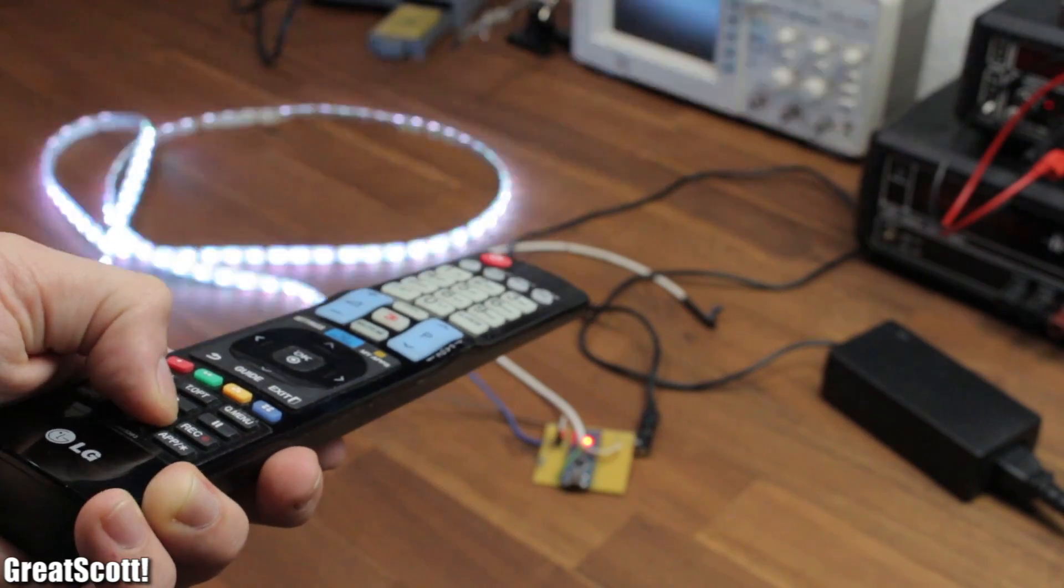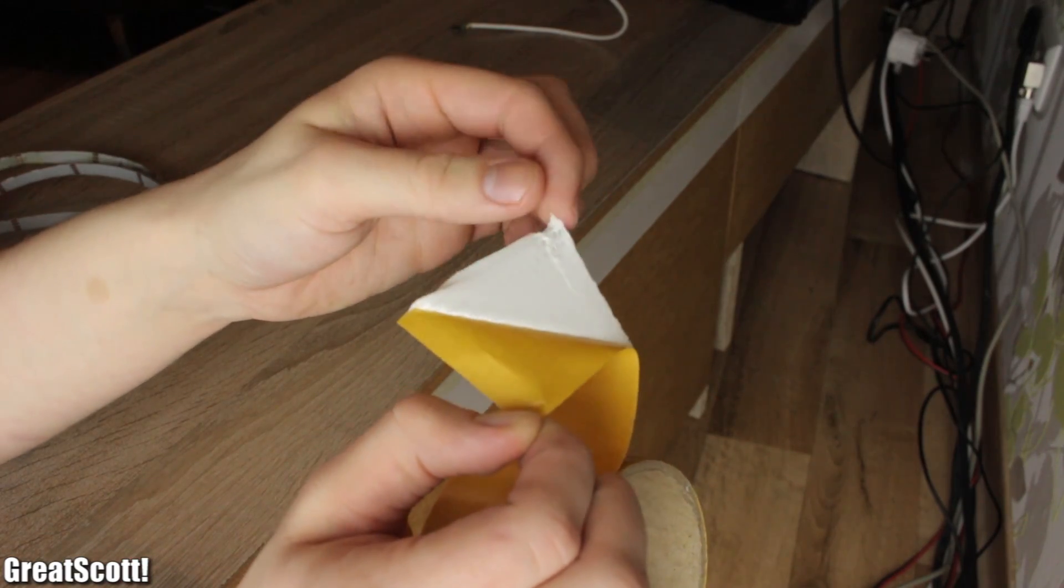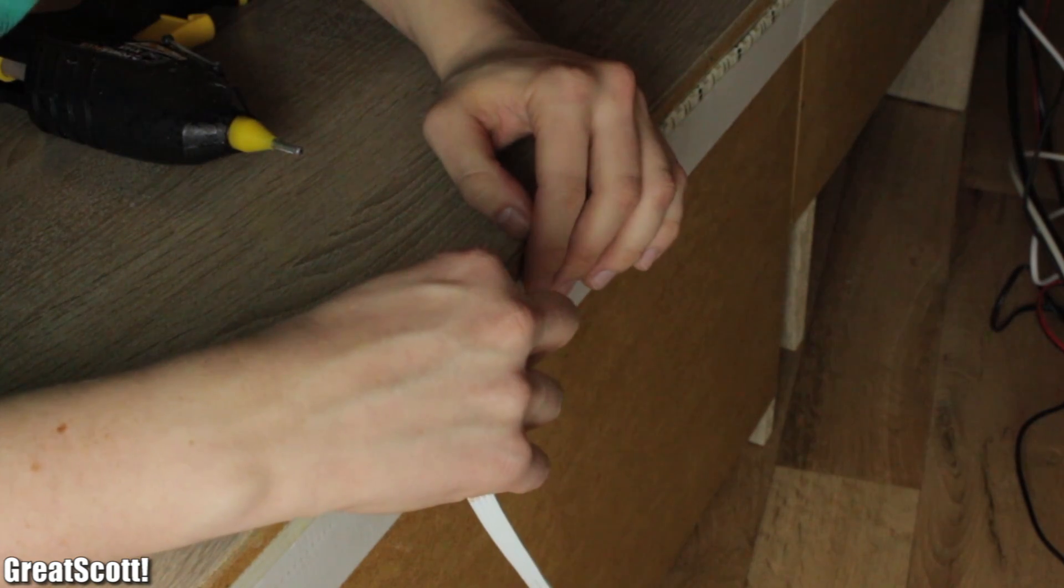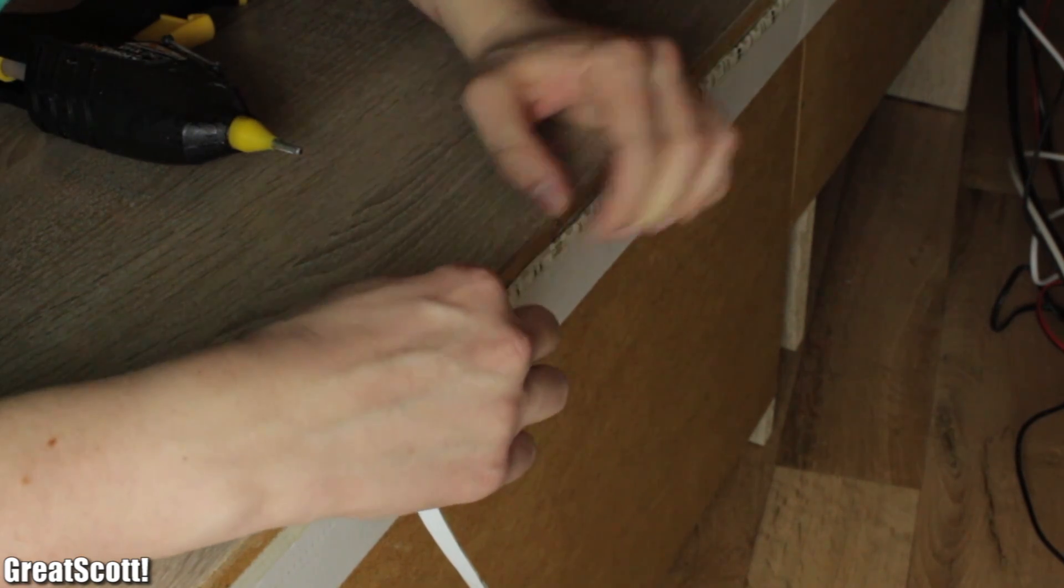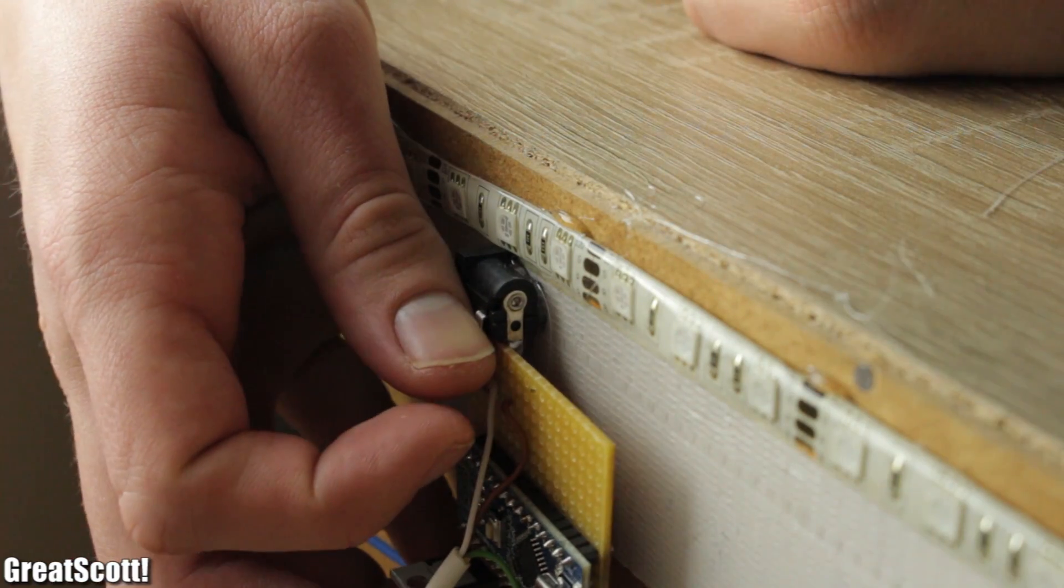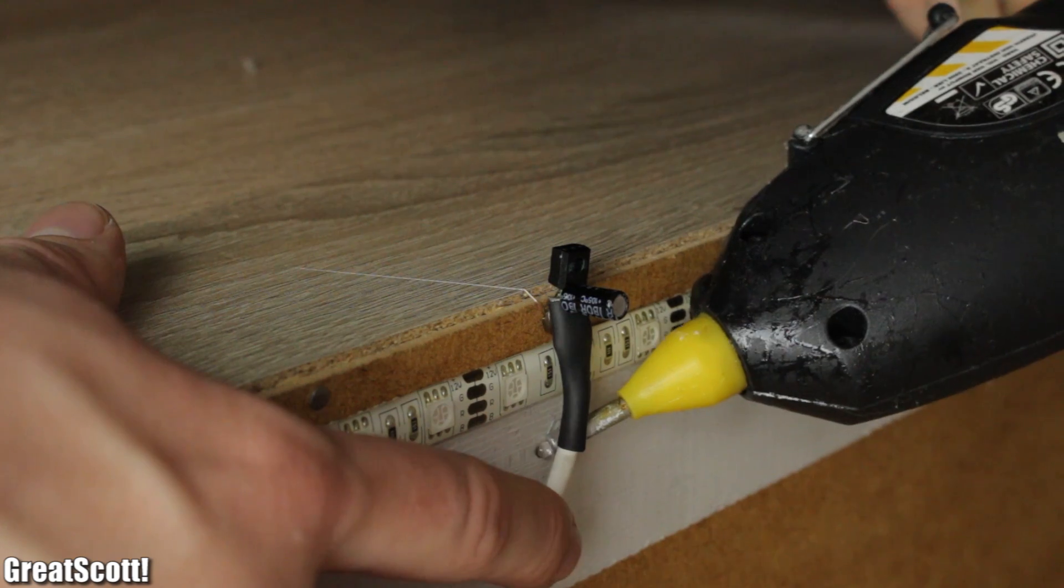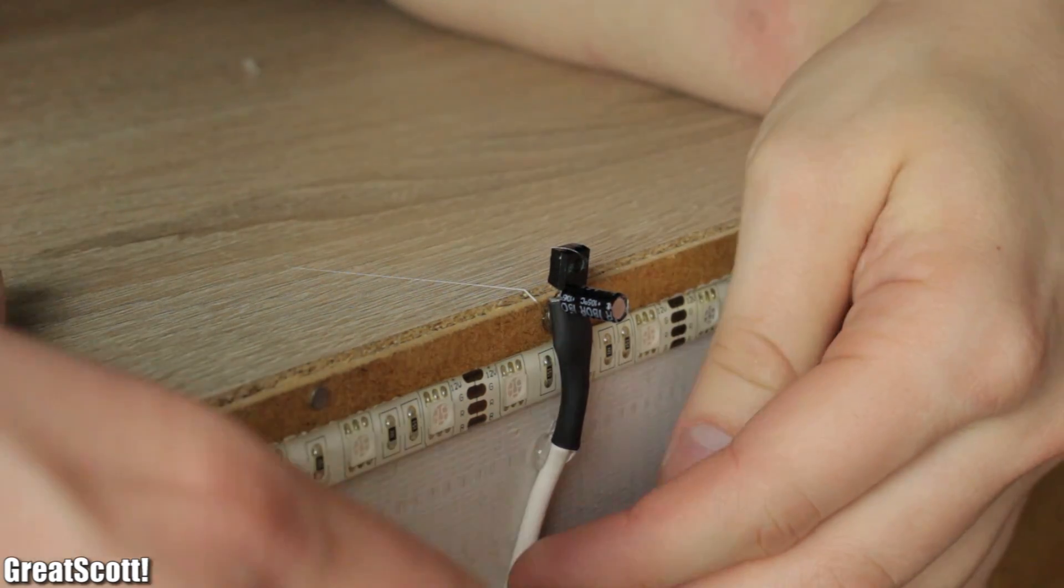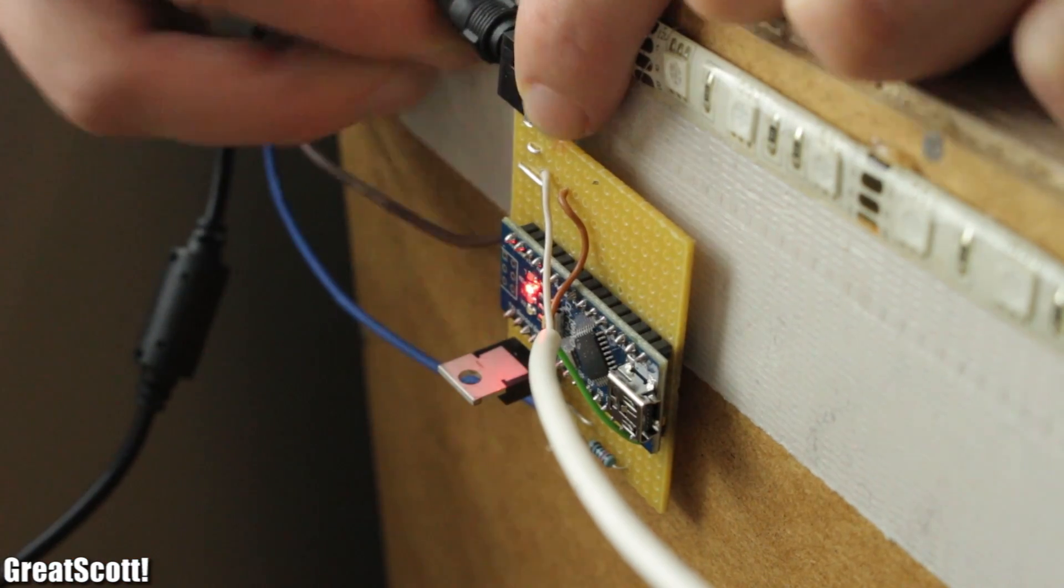Time to mount the strip. So I used this double-sided tape in combination with hot glue to secure the strip to the back of my TV cupboard, or however you call that. I also secured the PCB with hot glue and the IR receiver. But make sure that it peaks out a bit so it can properly receive the signal. And it is done.